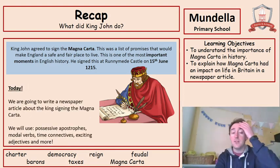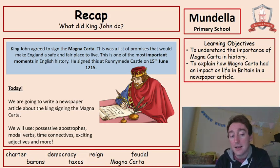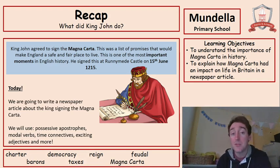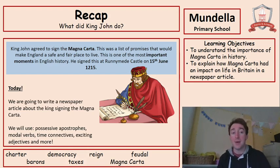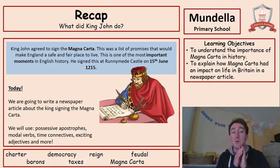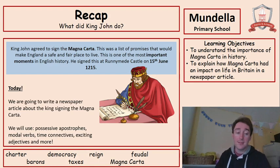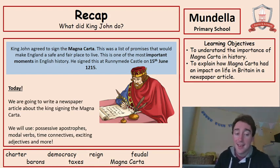Today we're going to write a newspaper article about the king signing the Magna Carta. We have to imagine that we're there at the time and we're reporters writing for the paper. Our front page is going to be about King John signing this famous piece of paper saying that everyone is more free than they've ever been before. We're going to use possessive apostrophes, modal verbs, time connectives, exciting adjectives, and more.